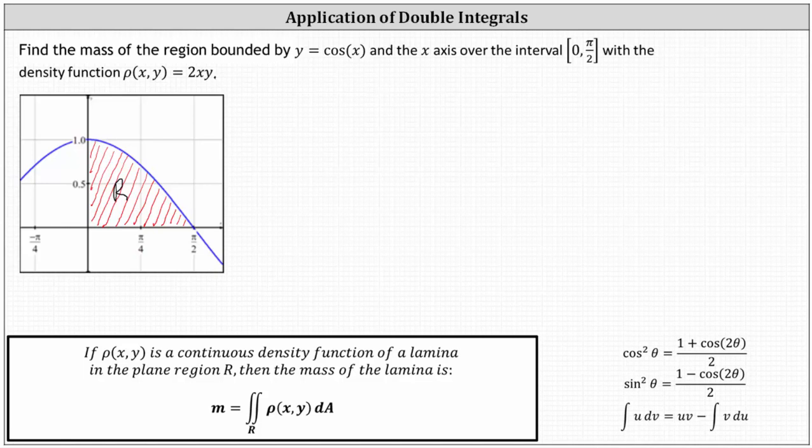Find the mass of the region bounded by y equals cosine x and the x-axis over the closed interval from zero to pi divided by two, with the density function rho of x, y equals two xy. To find the mass, we integrate the density function over the region R. Looking at the notes below, for differential dA, we'll use dy dx.